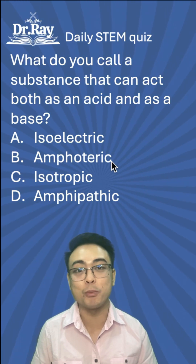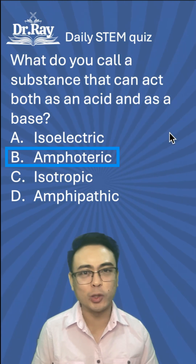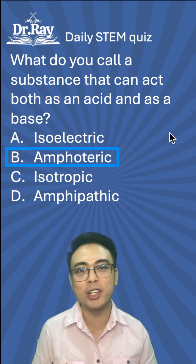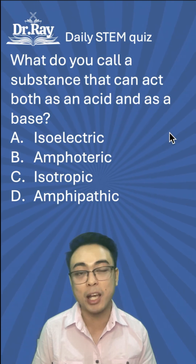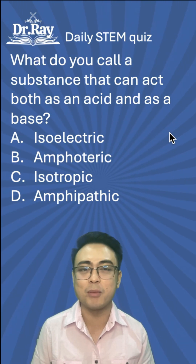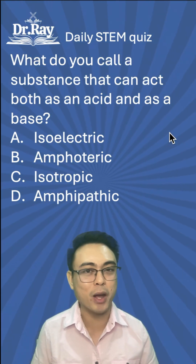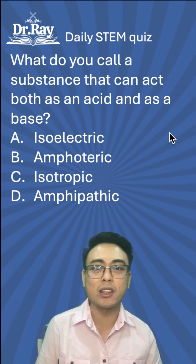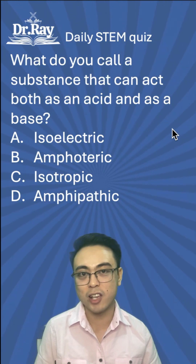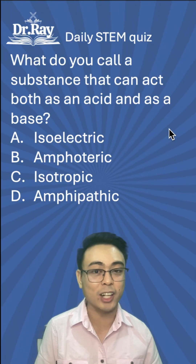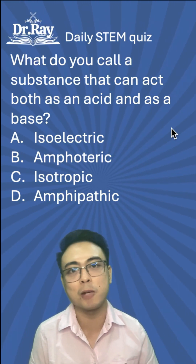The correct answer is letter B, amphoteric. According to the Lewis definition, an acid is a substance that can accept an electron pair, while a base is a substance that can donate an electron pair. Based on that definition, if a substance can do both — either accept or donate an electron pair — it is an amphoteric substance.